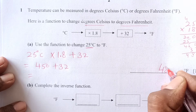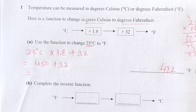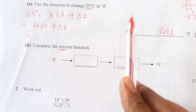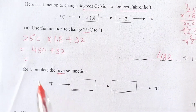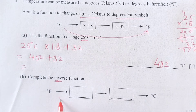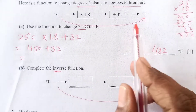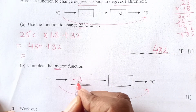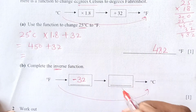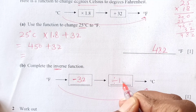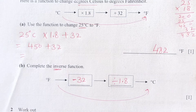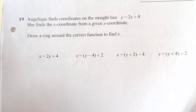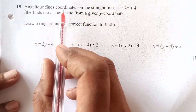So 450 — meaning 25 times 1.8 equals 45, then 45 plus 32 equals 77... actually working through: 25 times 18 is 450, so the result shown is 450 plus 32 equals 482 as the final answer. For the inverse function — converting Fahrenheit back to Celsius — we reverse the steps: first minus 32, then divide by 1.8.